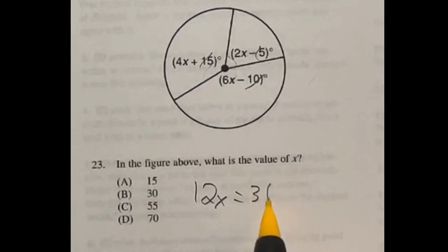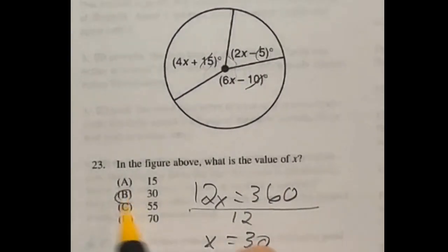And again, this is equal to 360. So now all I have to do is divide both sides by 12, and that gives me that x is going to be equal to 30, which is answer B.